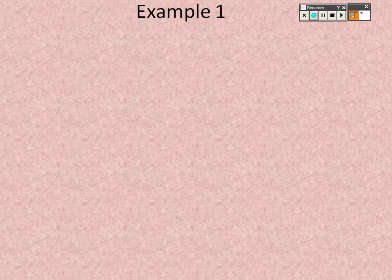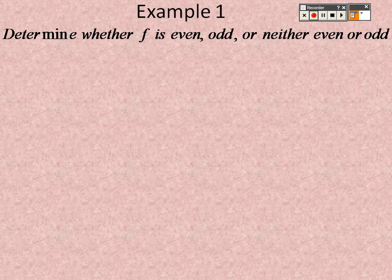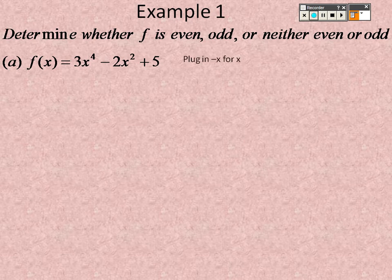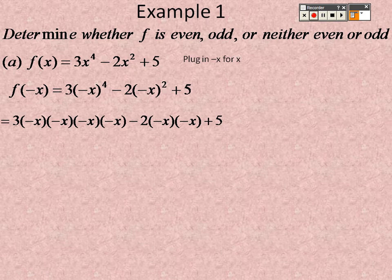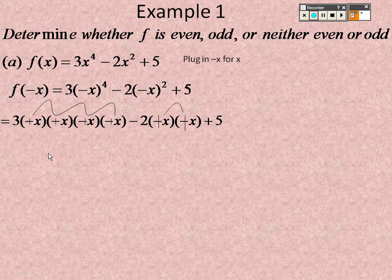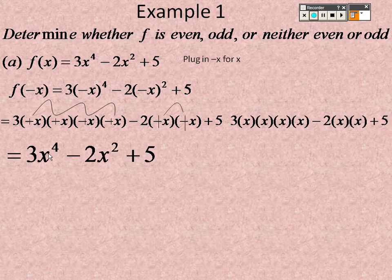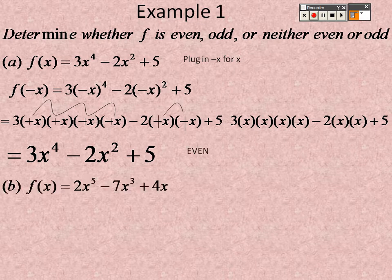For example one, determine whether it's even, odd, or neither. You plug a negative in for x. A negative to the fourth power means four negatives. If you have an even number of negatives, it stays positive. So when you push them all together you end up getting the same thing you started with, which means the function is even.